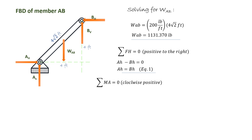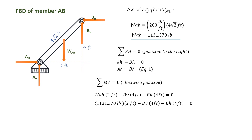Taking moments about A: WAB times 2 feet minus BV times 4 feet minus BH times 4 feet equals zero, using the respective perpendicular distances from A. We consider positive when rotation is clockwise about A. Substituting the value of WAB, we get Equation 2: 4BV + 4BH = 2262.740.